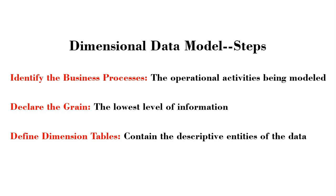Second, you need to declare your grain. The grain is the lowest level of information you want to capture within your data model or your database. The third step is to identify your dimensions. Dimensions are the descriptive entities of the data model — more like the 'who' aspect. The 'who' could be a person you are collecting information about, and 'where' refers to location. You need to identify these descriptive entities as your dimension tables.